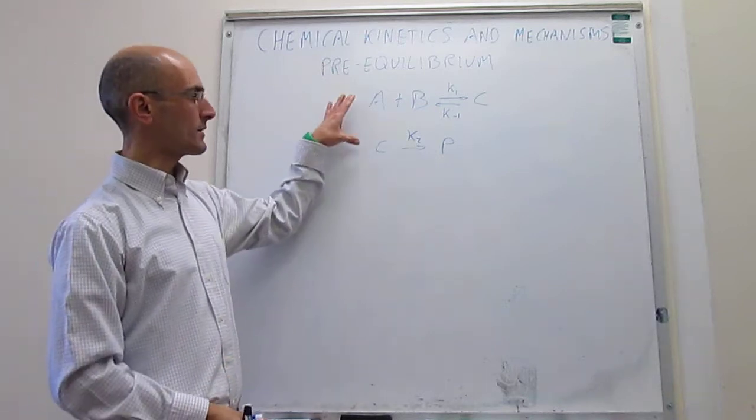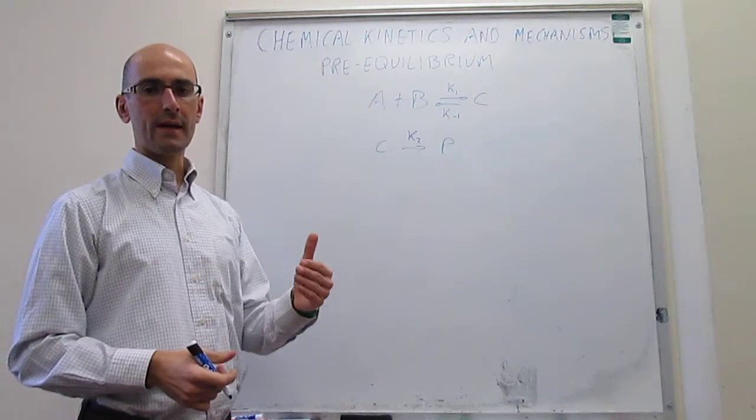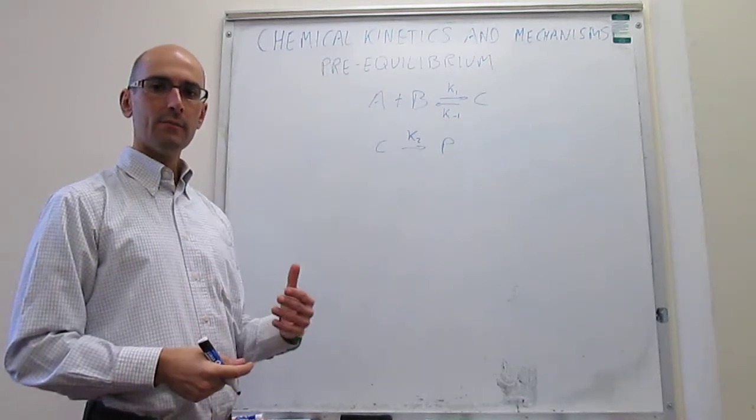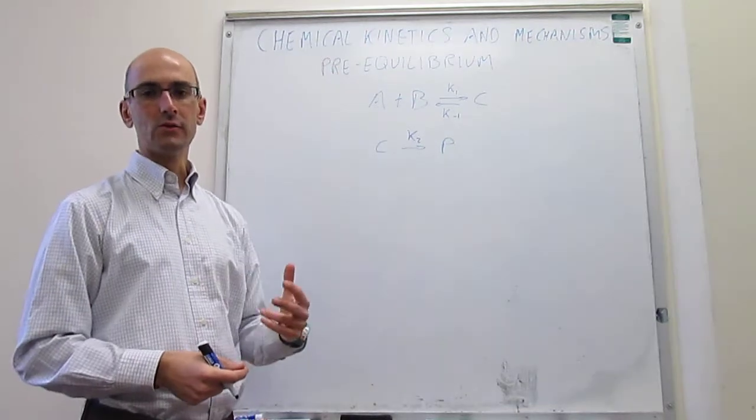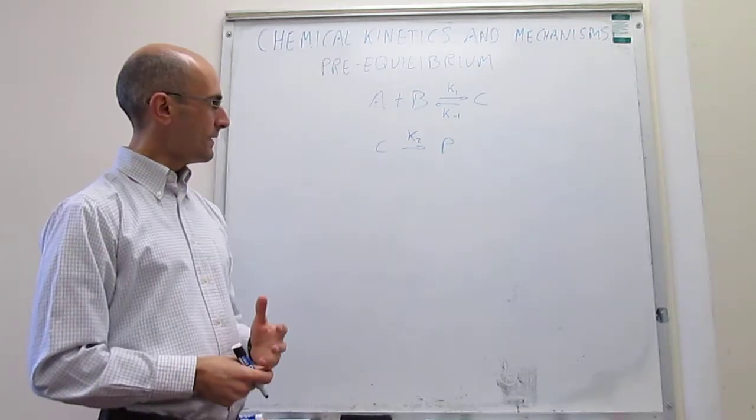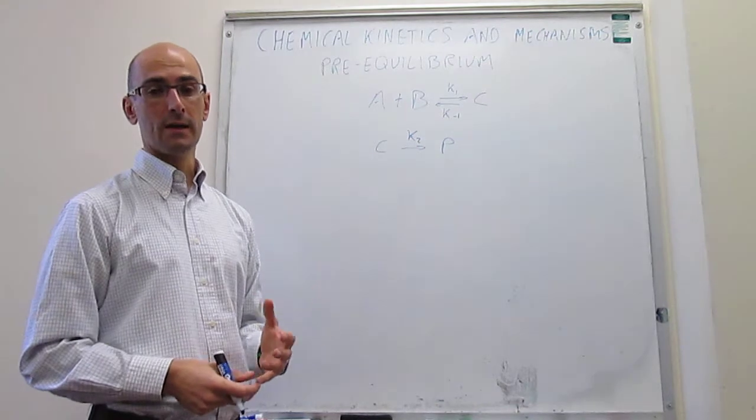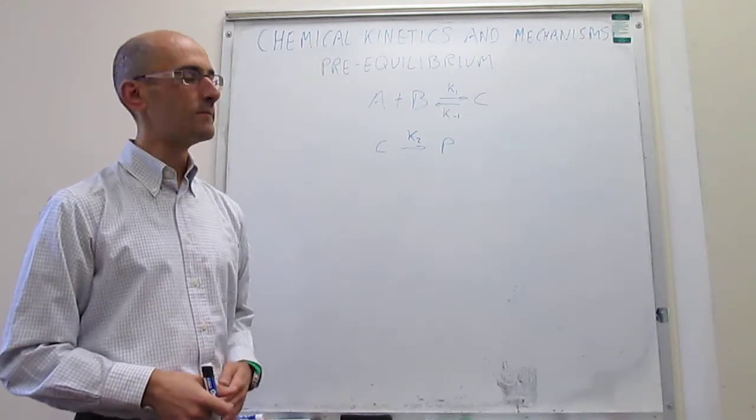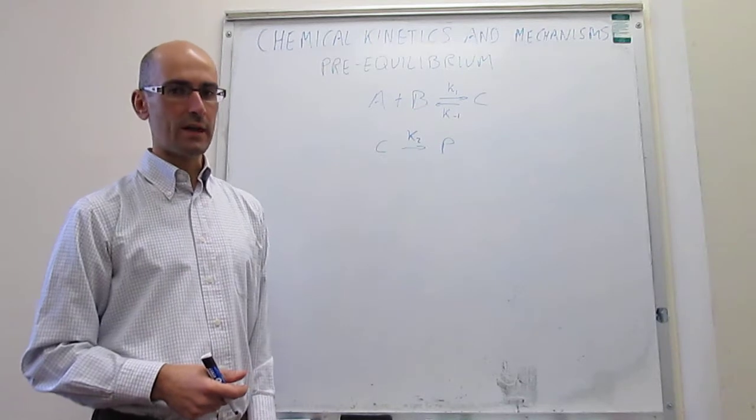When you add these two reactions up, the overall reaction would be A plus B to give products. But the mechanism is more complicated because you have one intermediate. The question would be, how do we analyze the rate law of this reaction? We are going to run two scenarios.